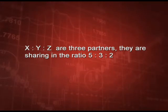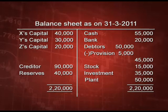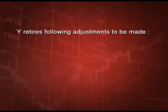Let us do one full question on retirement. Partners X, Y, Z share profits in the ratio 5:3:2. A balance sheet is given with capitals for X, Y, Z, creditors, and reserves on the liabilities side, and assets on the other side. Y retires, and the following adjustments are to be made.